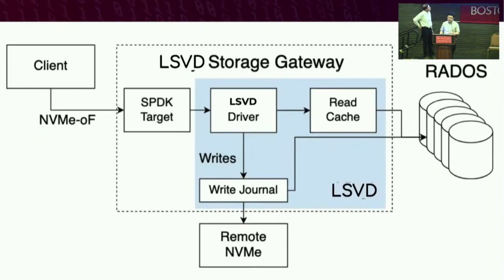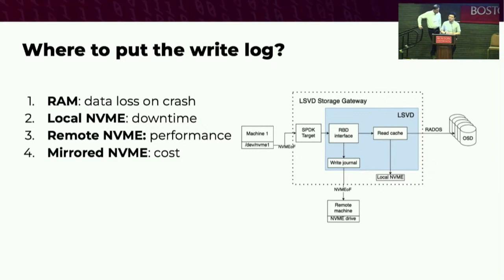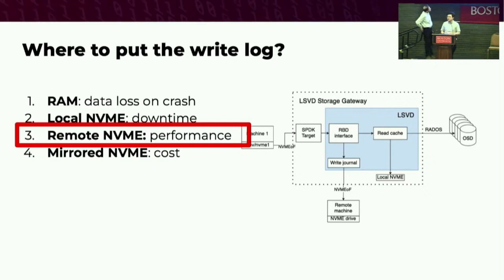The architecture looks like this: a client connects to the gateway over NVMe over fabrics, which runs over SPDK. We journal all writes on a remote write journal and serve reads from a local read cache, and for cache misses we read from the backend. There's a subtlety in where we put the write journal—we can't put it in RAM because if the machine crashes, all data not yet written to the backend is lost. One option is local NVMe, but if that machine crashes, you have downtime while recovering. The choice we ultimately made is putting the write journal on a remote NVMe drive, so if a machine crashes, you can spin up another gateway server to take over with very little downtime.